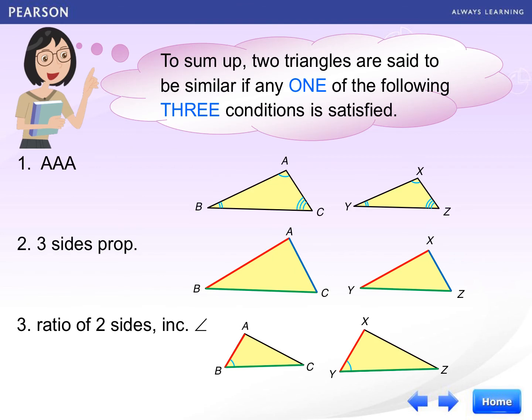From the last three videos that you have watched, we can make a summary. We can say that two triangles are set to be similar if any one of the following three conditions is satisfied. So what are they? They are AAA. Angles are the same. And another one is three sides proportional. Each corresponding side are proportional.